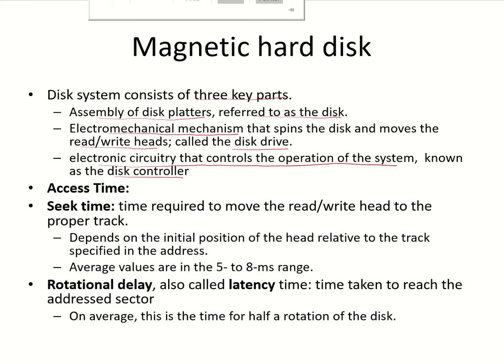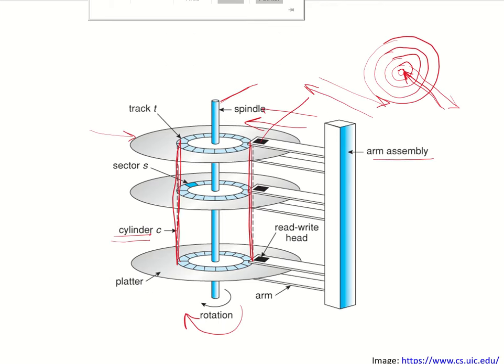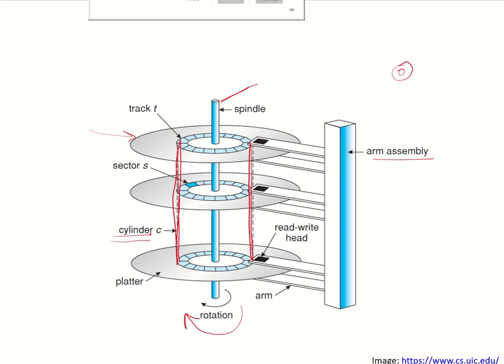The access time of the magnetic hard disk consists of two parts: seek time and rotational delay. The seek time is the time required to move the read-write head over the proper track. Whenever an address is generated, it refers to the surface, the track within that surface, and the sector on that track. Once the track address is known, the read-write head will move forward or backward depending on its current position and will position itself over the required track.